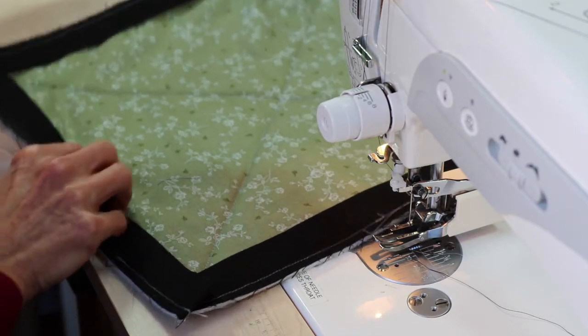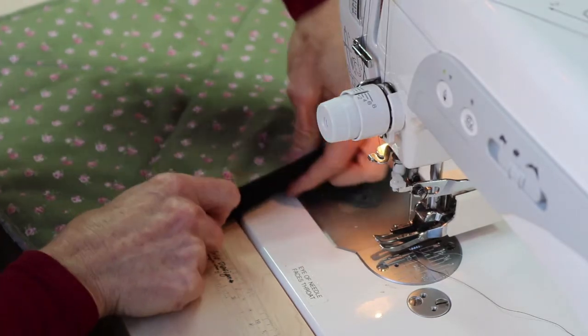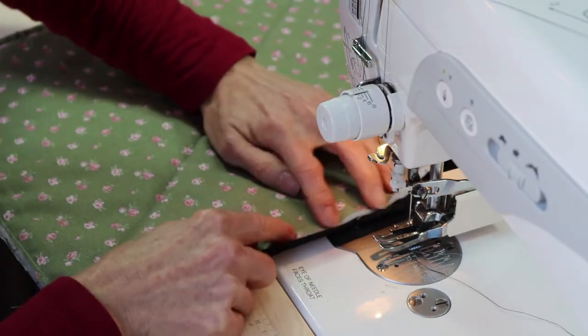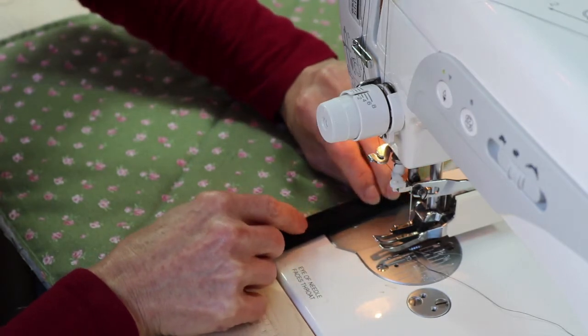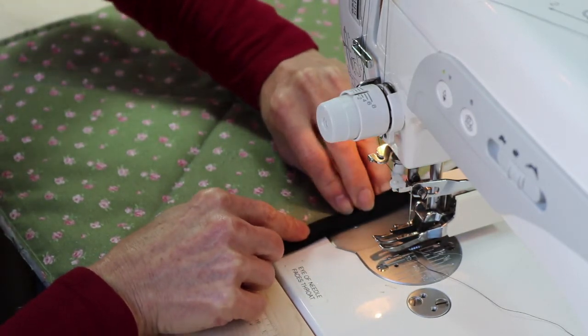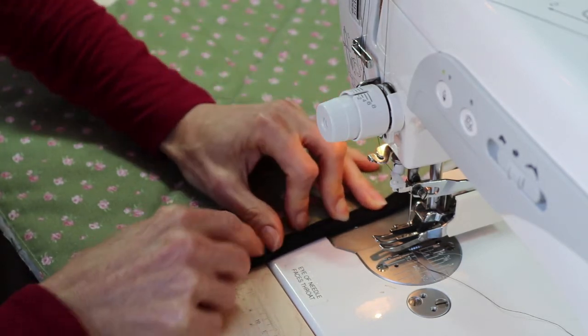We're going to turn our quilt over to the right side and we're going to take that binding and we are going to fold it over. Essentially you're just going to fold it over to just past that sewing line and we're going to do a nice neat top stitch on the edge.